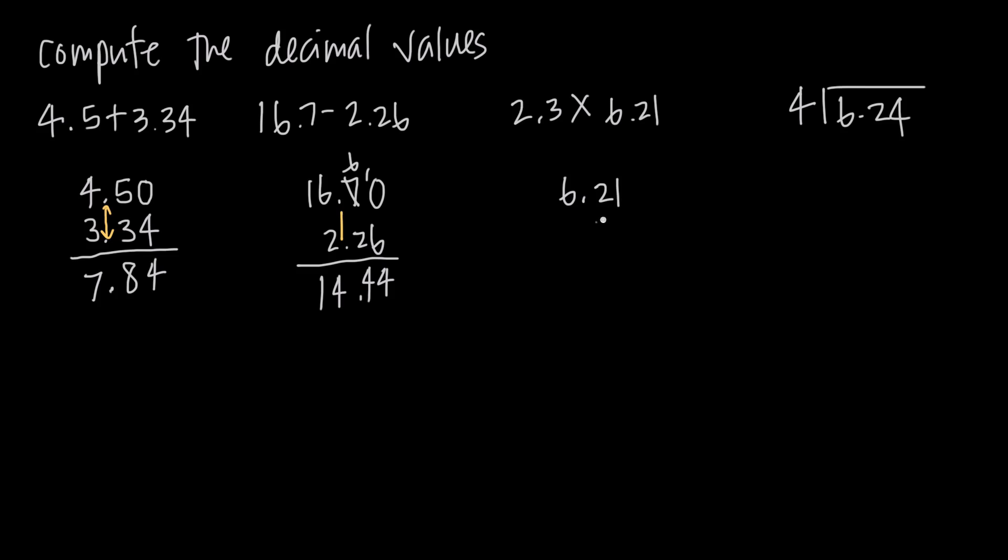And then we have our 2.3, so we'll put that here, 2.3. So in this case, you notice that we right align everything. We don't line up our decimal places. We just right align everything. And now we're going to do this like a regular multiplication problem, and we're going to pretend that the decimal places aren't even there.